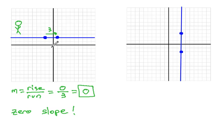Contrast this with the line on the right. Again, slope is calculated as the rise over the run. With the two points given, we see we rise 5 units. However, there is no horizontal change. There is no run.